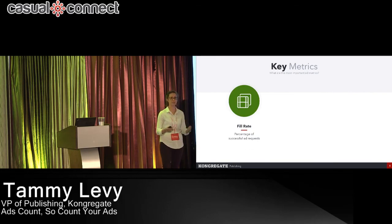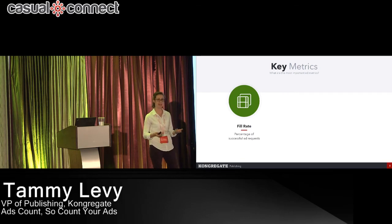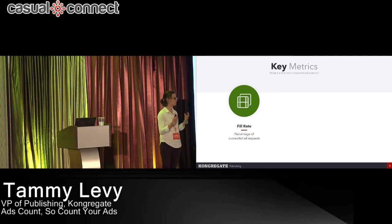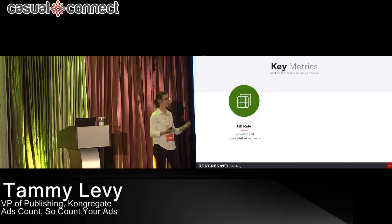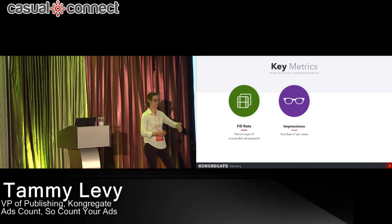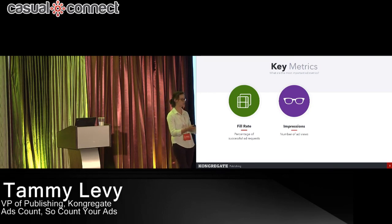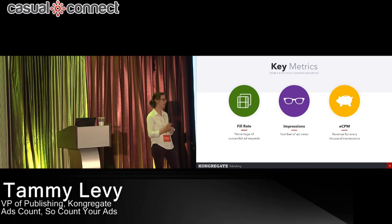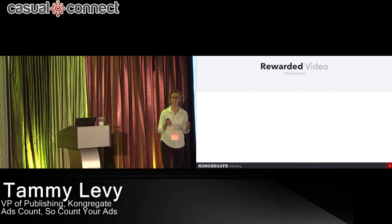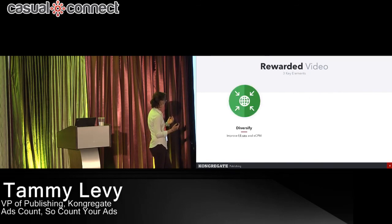I'm going to talk about three key metrics to keep in mind when optimizing ads. The first is fill rate — what percentage of ad requests actually get filled. When a player hits 'watch ad,' how many times is there actually an ad available? Second is impressions — how many total ad views you're getting every day. And third is CPM — how much revenue you're generating for every thousand impressions. There are three key elements to optimize these areas.